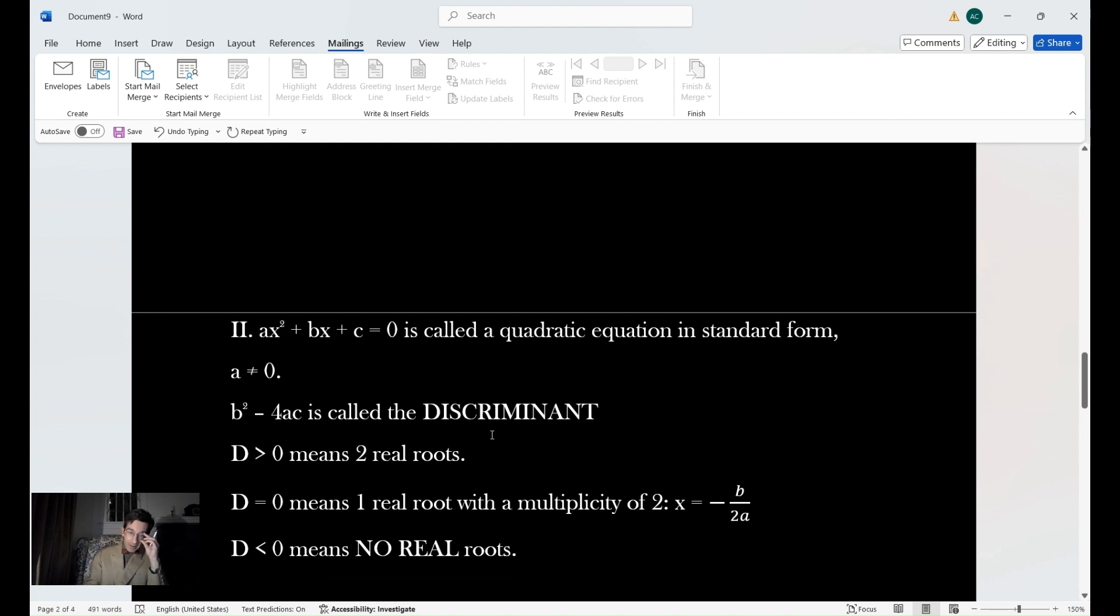This is a quadratic equation in standard form: ax squared plus bx plus c equals 0, and a cannot equal 0. b squared minus 4ac is called the discriminant. If the discriminant is greater than 0, your quadratic has two real roots. If it equals 0, you have one real root with multiplicity of 2, or x equals negative b over 2a. If it's less than 0, you don't have real roots, you have complex imaginary numbers.